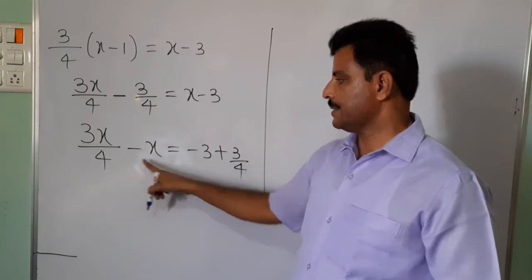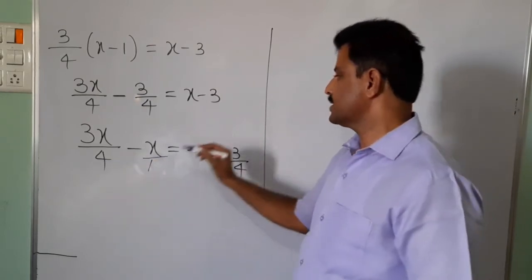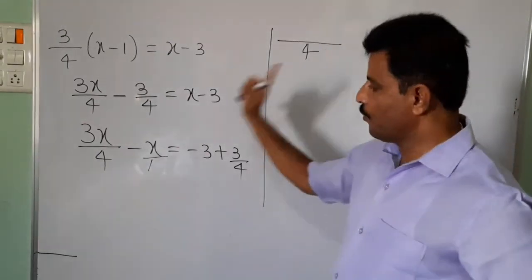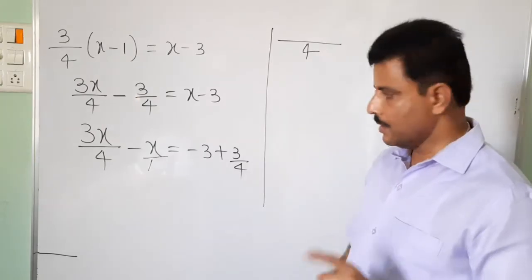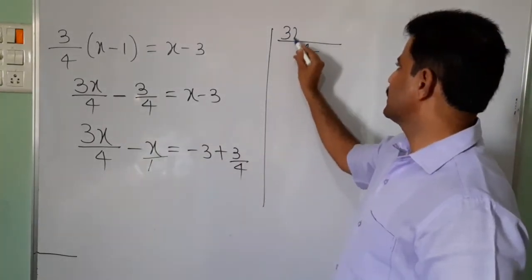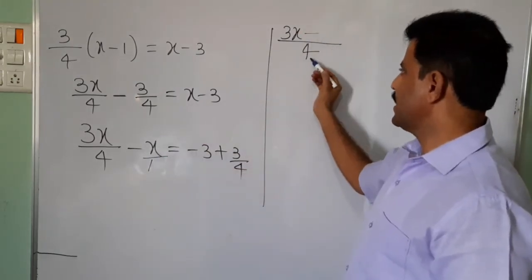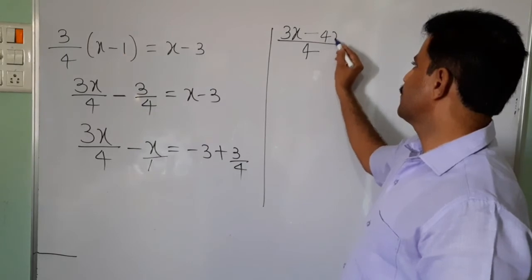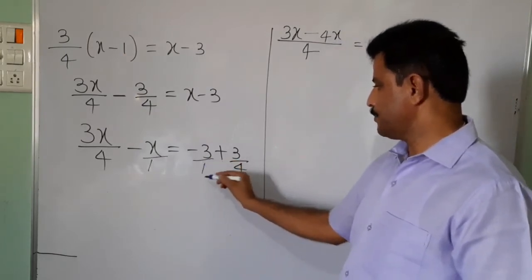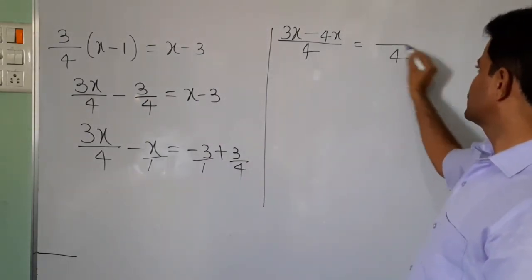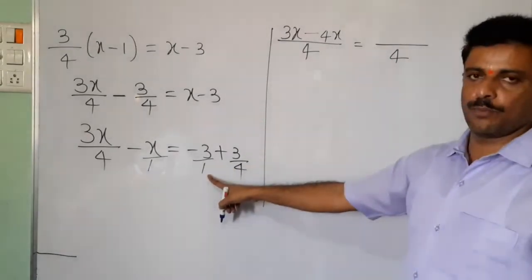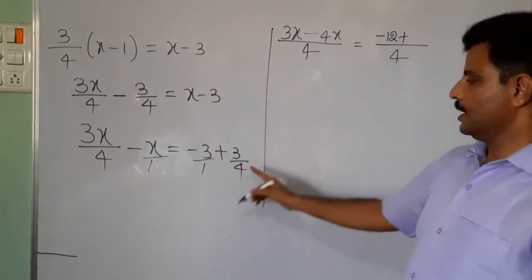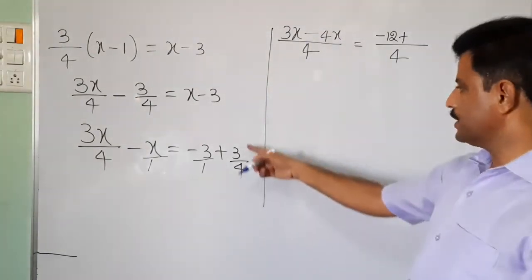Now take the LCM. LCM of 4 and 1 is 4. For the left side: LCM divided by denominator — 4 divided by 4 is 1, times 3x gives 3x. Minus: LCM is 4, denominator is 1, so 4 by 1 is 4, times x gives 4x. So 3x minus 4x on the left. For the right side: LCM is 4 — 4 by 1 is 4, times 3 gives 12, so minus 12. Plus 4 divided by 4 equals 1, times 3 gives plus 3. So the right side equals minus 12 plus 3.